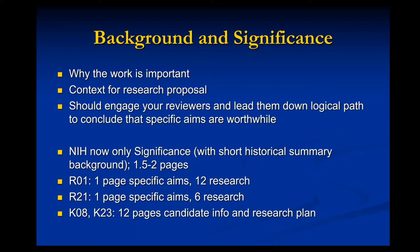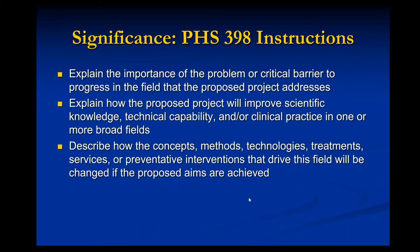You don't want to submit a grant that is a project we already know the answer to. The NIH instructions ask you to explain the importance of the problem or the critical barrier to progress in the field, explain how the project will improve scientific knowledge, technical capability, and clinical practice, and talk about how concepts, methods, technologies, or treatments will be changed if your proposed project is successful.